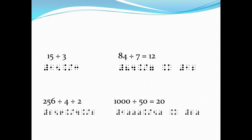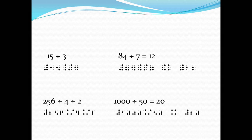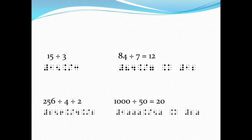For our third example, we have the expression 256 divided by 4 divided by 2, where there are two division signs in series. In Nemeth, we write the numeric indicator, digits 2, 5, and 6 for 256, the divided by sign, and number 4 — no space before and after the divided by sign. After 4, we write another divided by sign — dots 4 and 6 on the first cell and dots 3 and 4 on the second cell — with no space and no need to write a numeric indicator. Then we write our final divisor, which is 2.